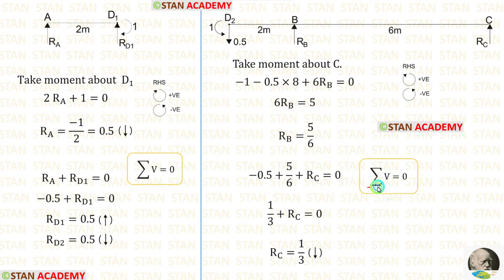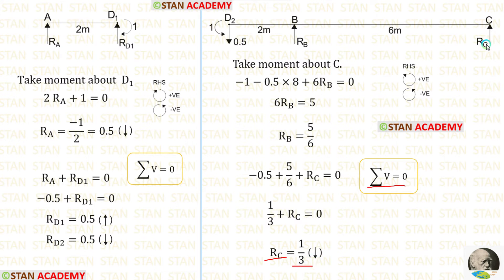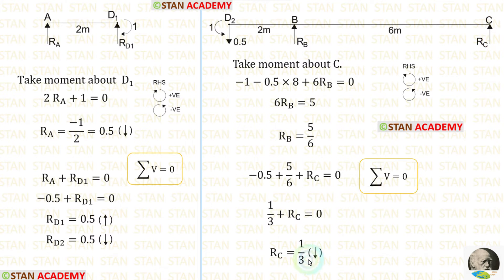Using sigma V = 0, we can calculate RC. For RC we will get a negative value, meaning our assumption is wrong — we assumed RC is acting upwards, but actually it is acting downwards.